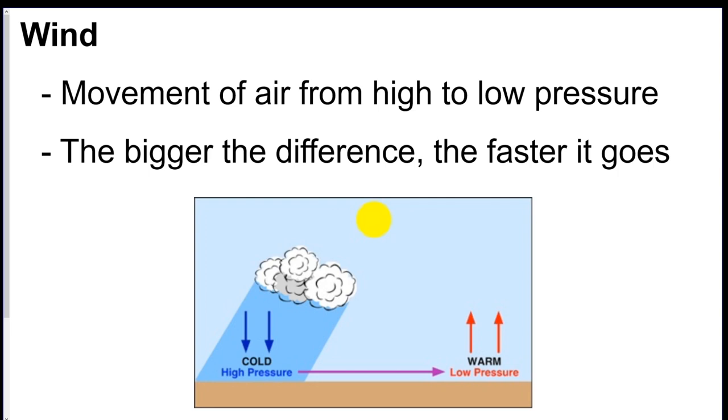So the only way to have wind is to have an area of high pressure and an area of low pressure. And generally, the bigger the difference between them, the faster the wind's going to move. So if there's a large difference in the pressure amounts, you're going to get your fastest winds.